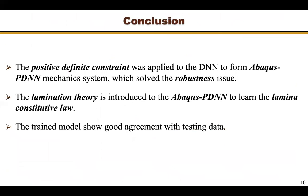In conclusion, the positive definite constraint was applied to the DNN to form the Abaqus-PDNN mechanic system. This system solved the robustness issue of learning the constitutive law of severely damaged material. The lamination theory is introduced to Abaqus-PDNN to enable it to learn the lamina constitutive law. Finally, the trained model showed good agreement with testing data. This demonstrates that it is feasible to learn the lamina constitutive law based on the laminate surface response.